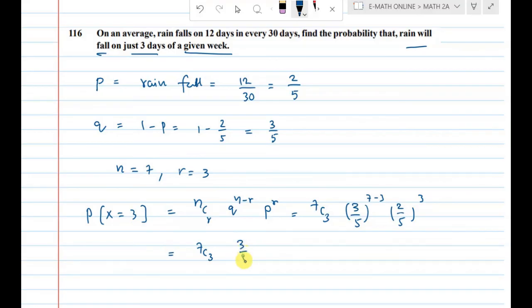7C3 times 3 by 5 whole to the power 4, times 2 by 5 whole to the power 3. This is the answer.